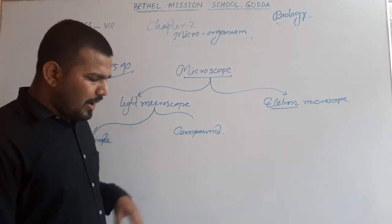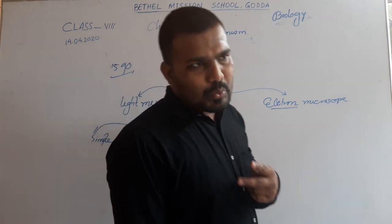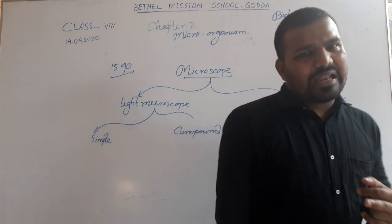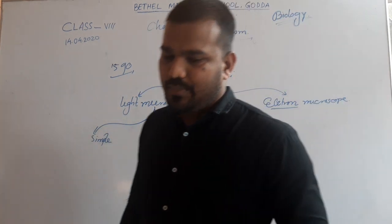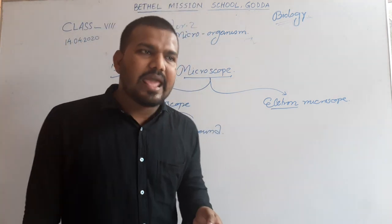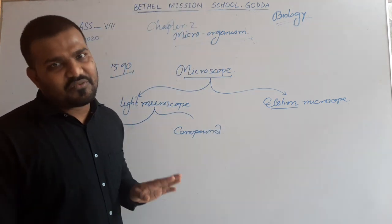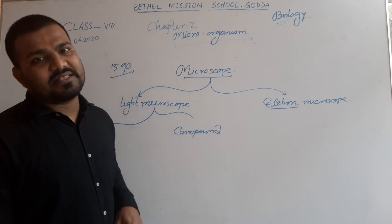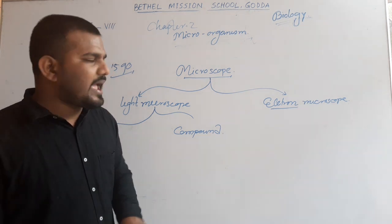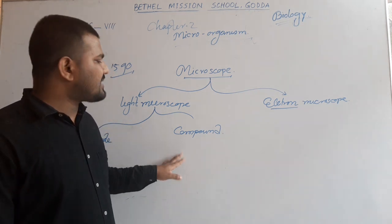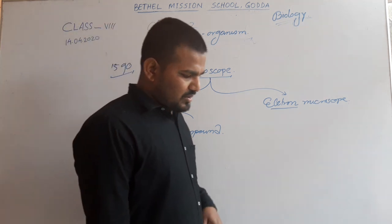The compound light microscope has two lenses: one lens near to the eye, known as the eyepiece lens, and another lens near to the object or specimen, termed as the objective lens. The viewing media is light, so it is termed as the compound light microscope.